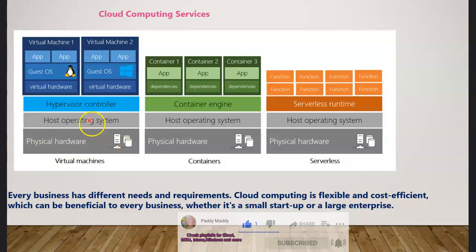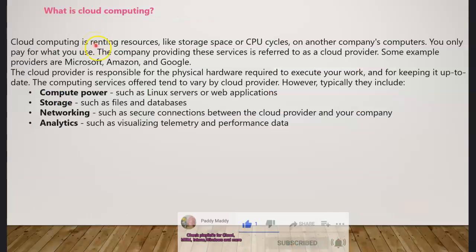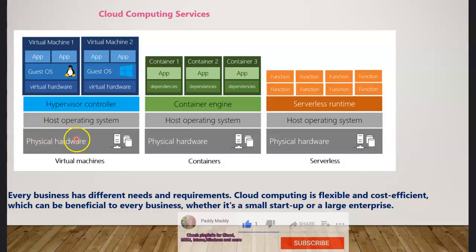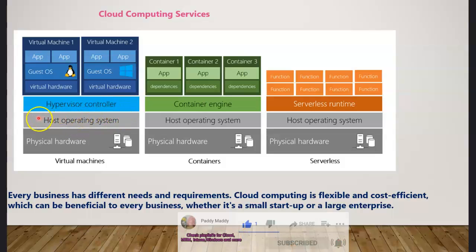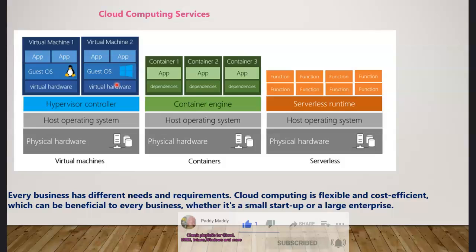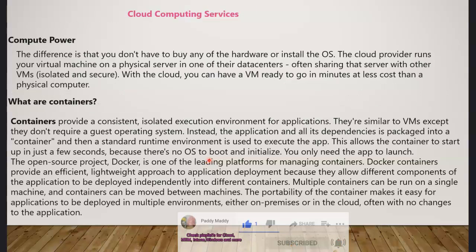This is how cloud providers give you resources as a rental. When we talk about renting from Amazon, Microsoft, or Google, they have physical hardware, and they install a host operating system on top of it. They install a hypervisor controller — for example VMware or Hyper-V — and on top of that they create different VMs, fully integrated with the cloud, so with one click you can create a VM with the desired operating system and applications.